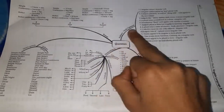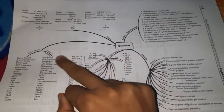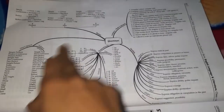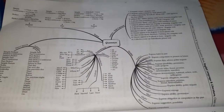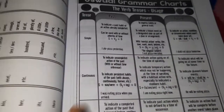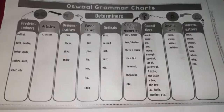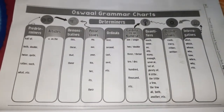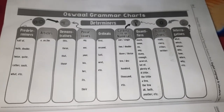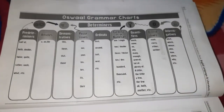You can see determiners, direct speech and indirect speech — here are the models. You can take a screenshot of this for your own self-revision. They have explained the syllabus of grammar very well. On the next pages they have explained each particular topic. This is all about determiners.